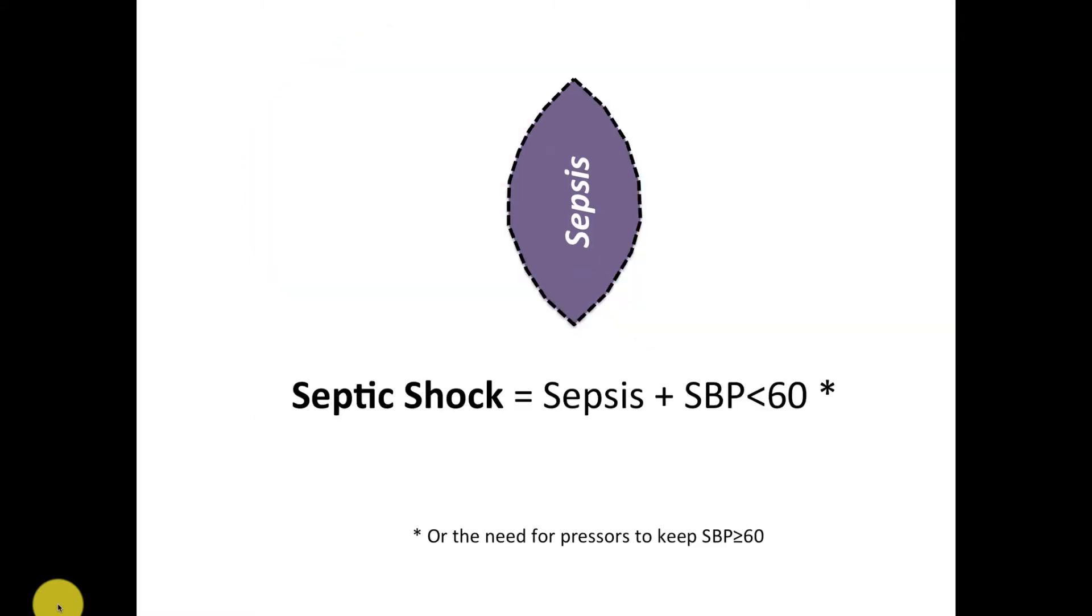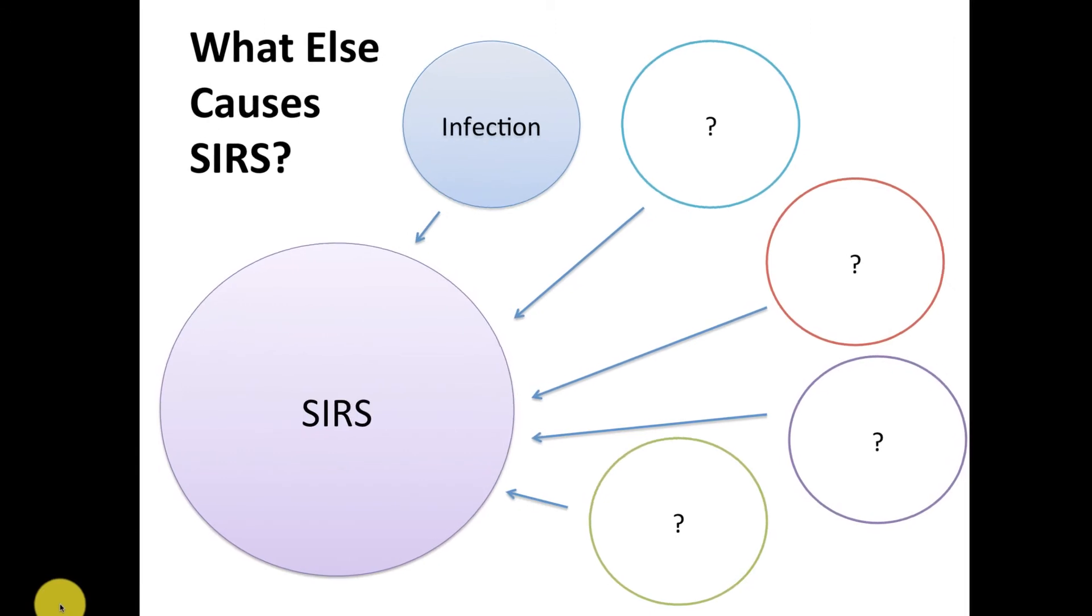And sometimes you'll hear people say septic shock on the wards, and septic shock is really just sepsis plus hypotension, either spontaneously a systolic blood pressure below 60 or the need to use vasopressor agents to keep the blood pressure up above that. Severe septic shock is just the worst side of that, and you need multiple pressors.